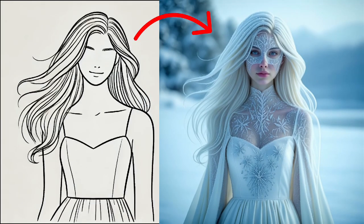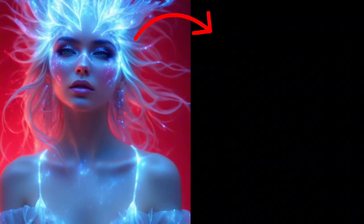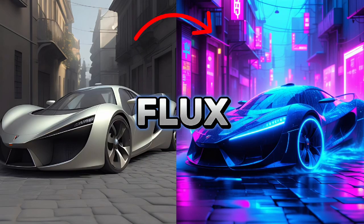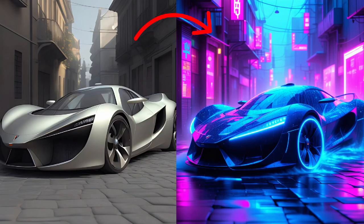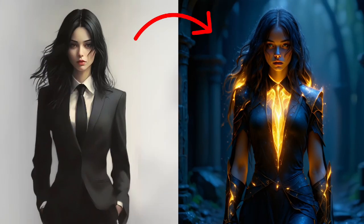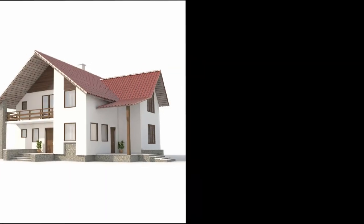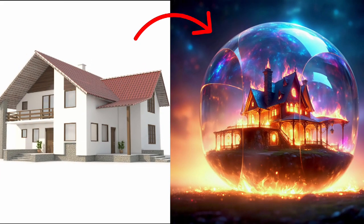AI art models are changing the game, and two of the most exciting ones out there are Stable Diffusion 3.5 and Flux. These models offer amazing ControlNet features that let you take charge of image composition like never before. In this video, I'll walk you through how both models handle ControlNet tools so you can decide which one is perfect for your creative projects.